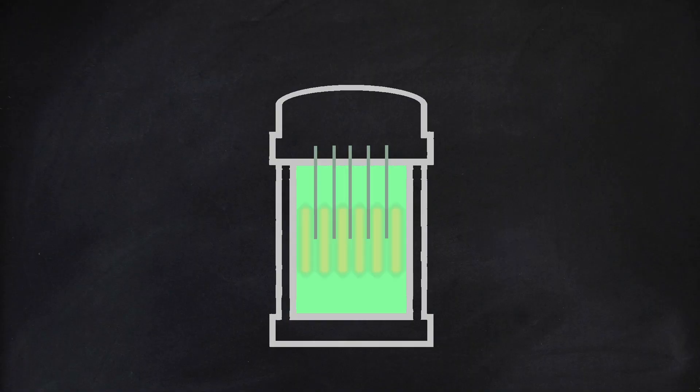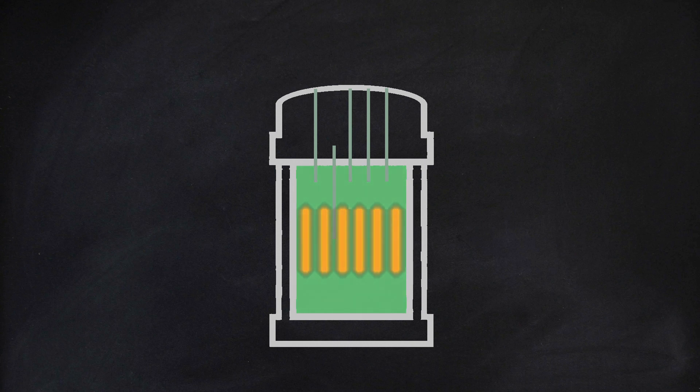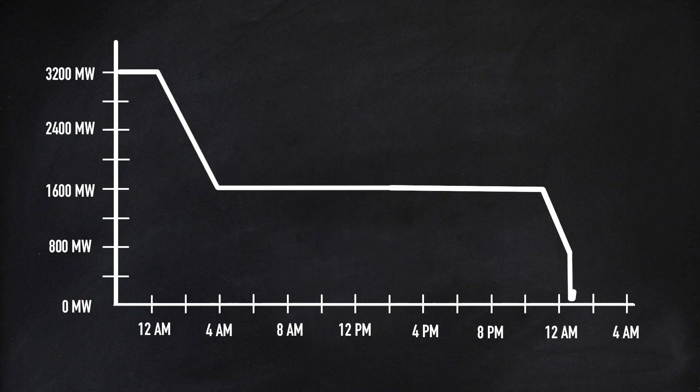Against all safety precautions, the engineers withdraw nearly all of the control rods in an effort to bring the reactor back to power. Additionally, emergency safety measures are disabled to prevent them from interfering with the experiment. The power of the reactor begins to rise.